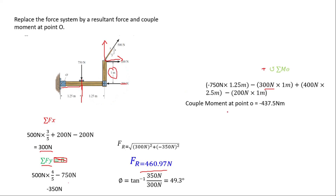Summing all the moment contributions, the couple moment at O equals negative 437.5 newton-meters, which means the couple moment at O is 437.5 newton-meters clockwise, indicated by the negative sign. Thank you very much for watching.